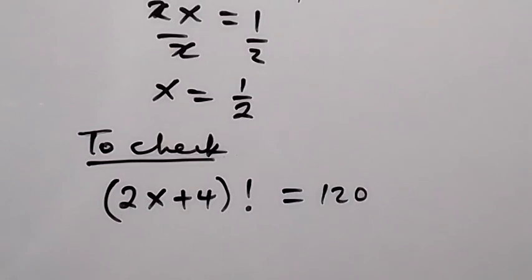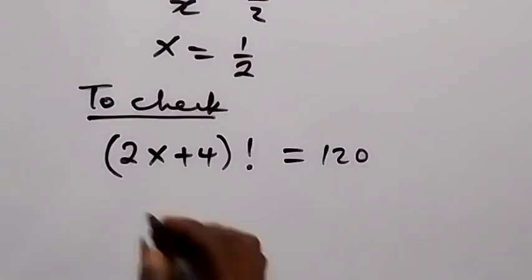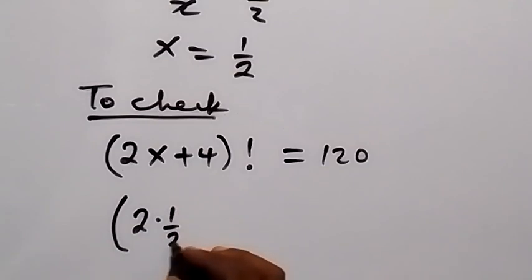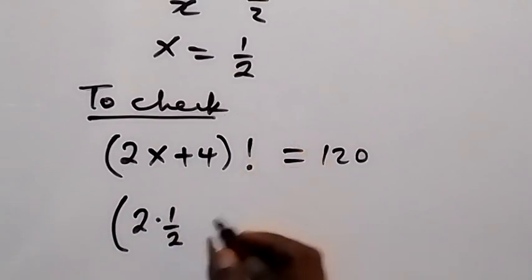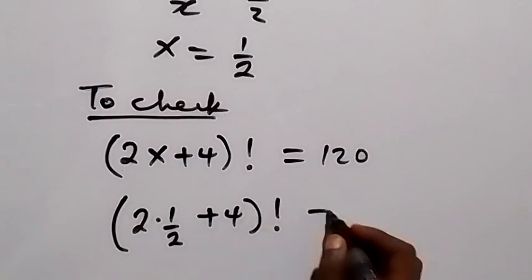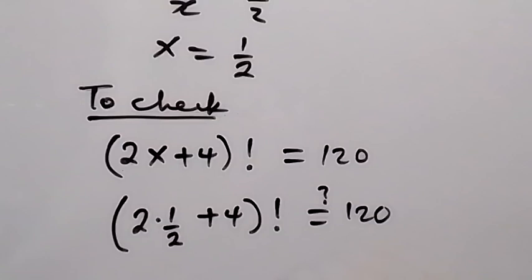Because we got x to be 1/2, then plus 4 factorial equals to 120. The value of 2 times 1/2 equals to 1, then 1 plus 4 equals 5.